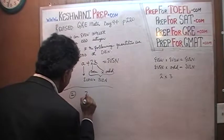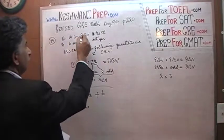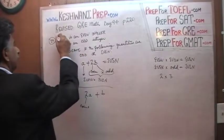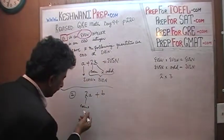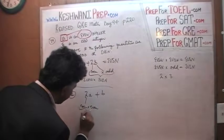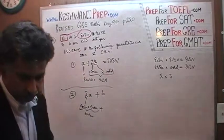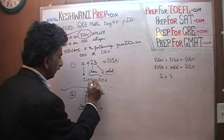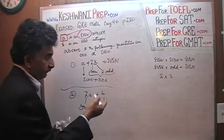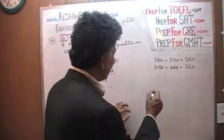The next expression is 2 times a plus b. Here, 2 is even and a is even, so 2 times a is even times even, which is even. Now we also need to handle even times odd. Let's figure out the rules: even times even is even, and even times odd is odd — let's figure out the last combination.